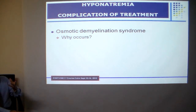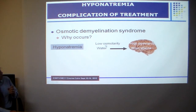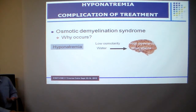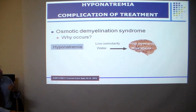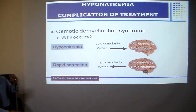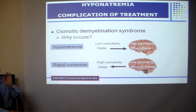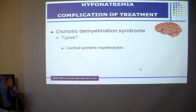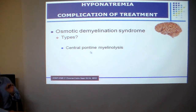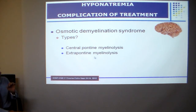Why does osmotic demyelination syndrome occur? In hyponatremia, due to low serum osmolarity, water moves into the brain causing cerebral edema. In chronic hyponatremia, there is a form of adaptation and water gradually moves out, so the patient may be asymptomatic. When you rapidly correct hyponatremia, the reverse occurs — water rapidly leaves the brain causing brain shrinkage and osmotic demyelination, which typically occurs in the pons area and is called central pontine myelinolysis, though it can also be extrapontine.